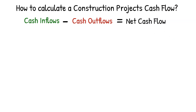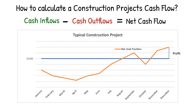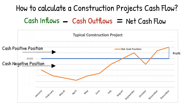Let us look at what a cash flow forecast may look like on a 12-month construction project. The graph shows how the net cash position on a construction project may change over time, after calculating the cost of construction to the contractor versus the amount of money coming in through payment of their applications and invoices. Anything above the line where the inflow exceeds the outflow is a cash positive position, and anything below the line where outflows exceed inflows is a cash negative position.